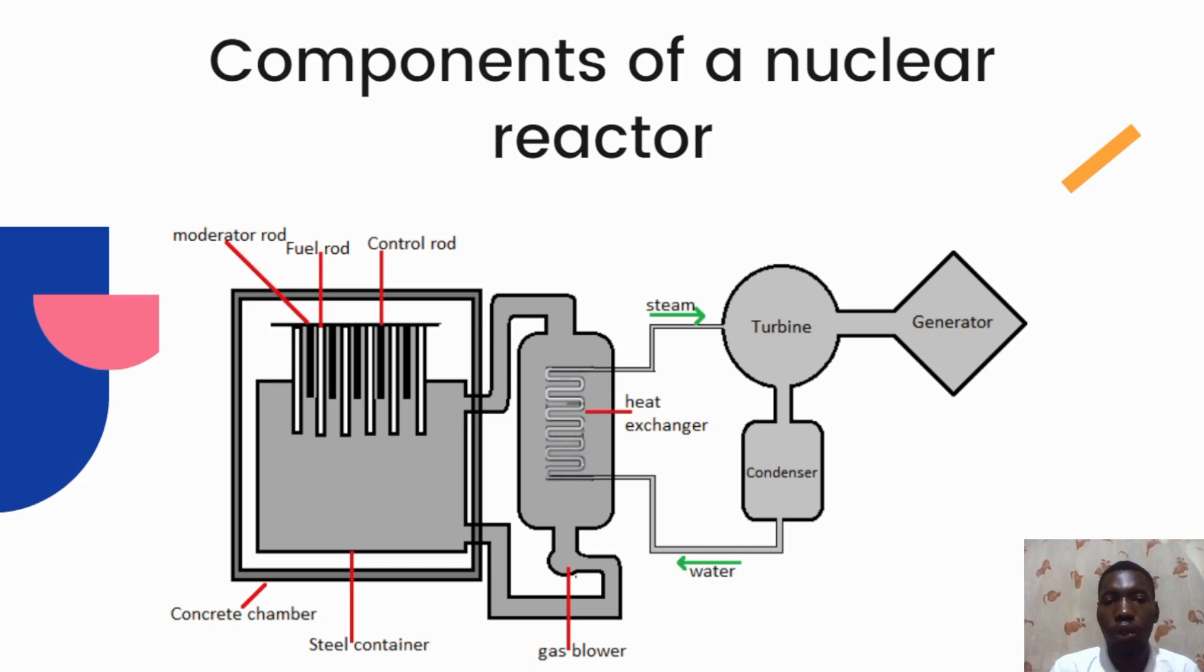The coolant, which is typically water, circulates through the reactor core to remove the heat produced by the fission reactions and transfer it to a steam generator, where it is used to produce electricity.